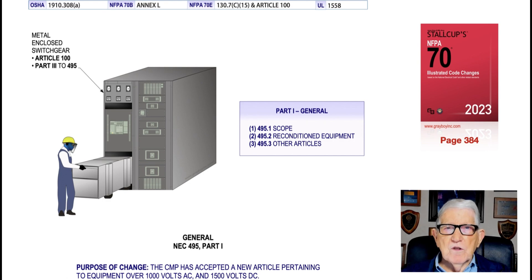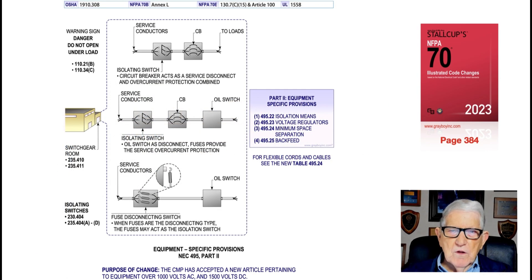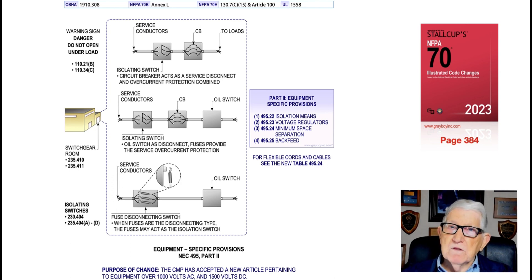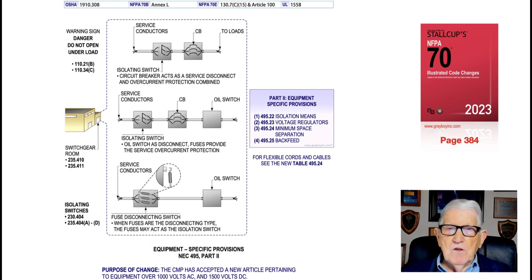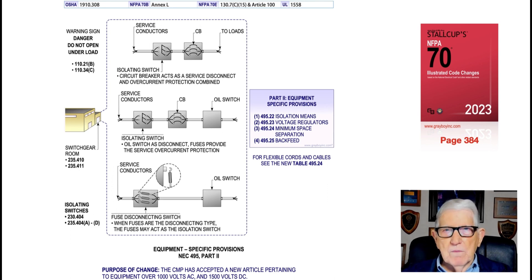This illustration deals with equipment-specific provisions in accordance with new Article 495 Part 2. Notice the boxed information titled Part 2 — Equipment Specific Provisions — with four sections: isolation means, voltage regulations, minimum space separation, and backfeed requirements. The illustration shows the disconnecting means and overcurrent protection, and what can serve as a disconnecting means to make up the overcurrent protection for equipment covered under Article 495.